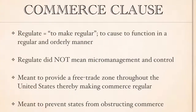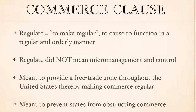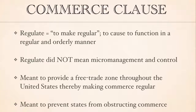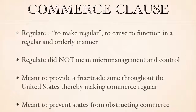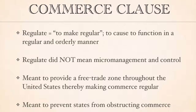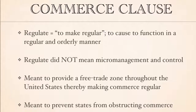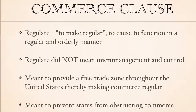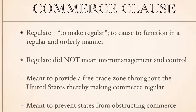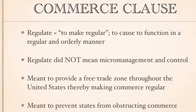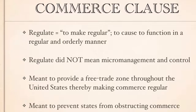Finally, the word 'regulate' in the 18th century meant to make regular — that is, to cause to function in a regular and orderly manner, as opposed to the word's modern meaning that suggests micromanagement and control. The Commerce Clause was intended to grant Congress the power to keep states from raising protectionist barriers against interstate trade. During the times of the Articles of Confederation, states were taxing goods from other states and experiencing economic wars that threatened to become physical wars. Thus, the clause was meant to provide for a giant free trade zone throughout the United States, making commerce regular, and to prevent states from obstructing commerce by leveling discriminatory taxes against the goods of other states.